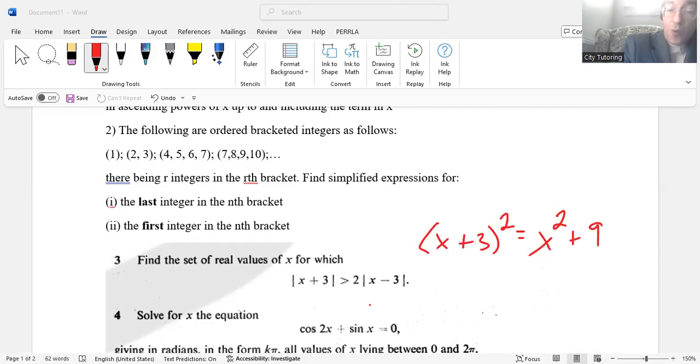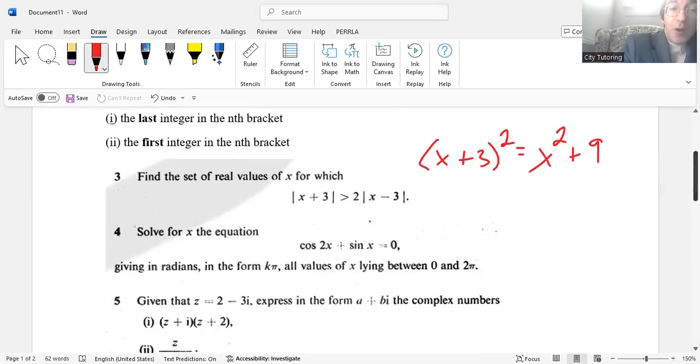Question number four was a basic one: solve for X in the equation cos(2X) + sin(X) = 0, giving in radians in the form Kπ all values of X lying between 0 and 2π. This actually was well done. Most students got this one.